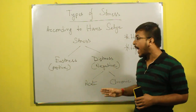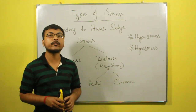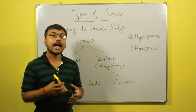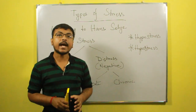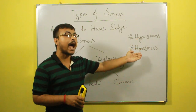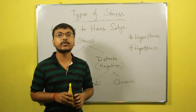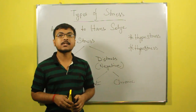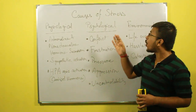Distress has two types: one is acute and the other is chronic. When we experience distress for a short period of time, it is called acute distress. And when it lasts for a longer period of time, it is called chronic distress. Besides these two types, there is also hyperstress and hypostress. When the stress level is excessive, it is called hyperstress. And when the stress level is very low or the stimulus is missing, it is called hypostress.